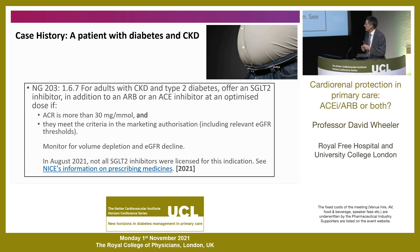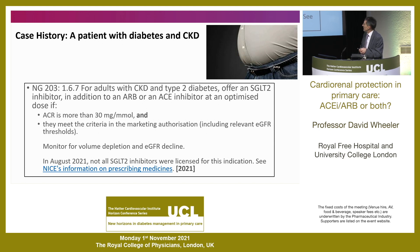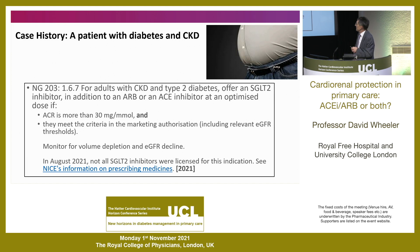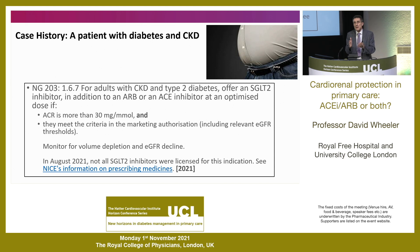What is NICE's position? They are somewhat in the middle because the data were coming out as the guidelines were being developed. But they do say: think about SGLT2s or offer an SGLT2 inhibitor in addition to the ACE or ARB once the dose has been optimised, in patients with an ACR greater than 30 mg/mmol or who meet the criteria in the market authorisation, including relevant eGFR thresholds. This has been a changing field — dapagliflozin has just received a licence in the UK for use without a lower eGFR limit, effectively liberating us to use dapagliflozin in patients whatever the eGFR.